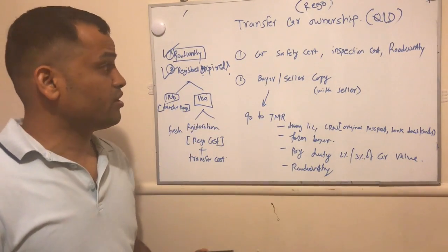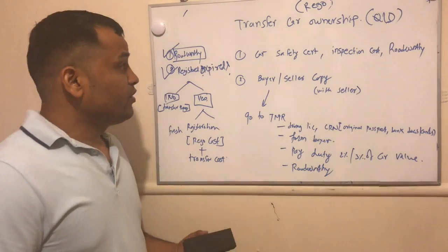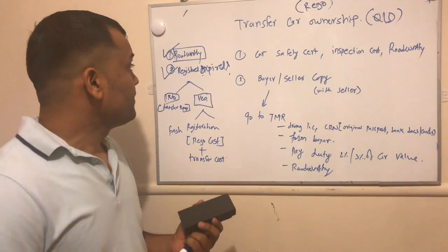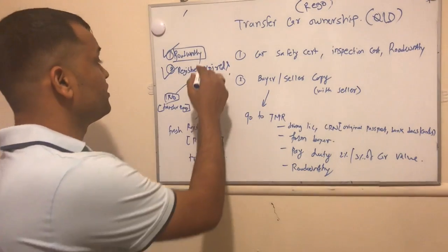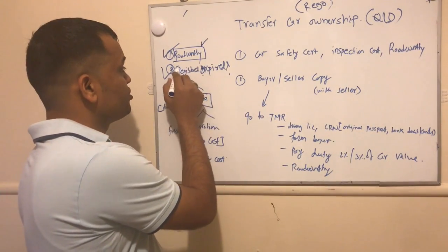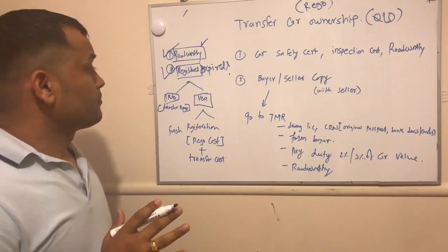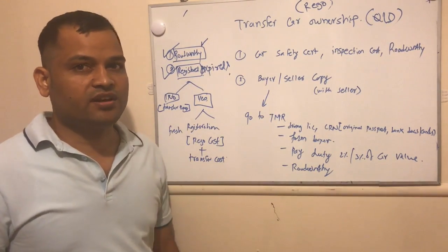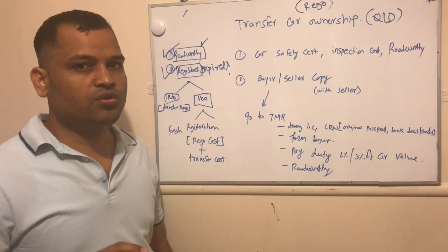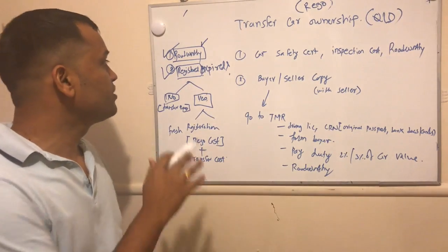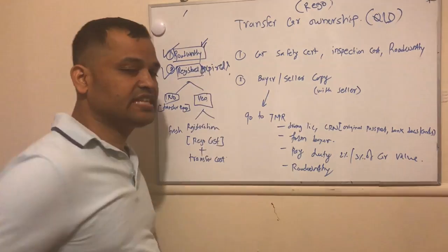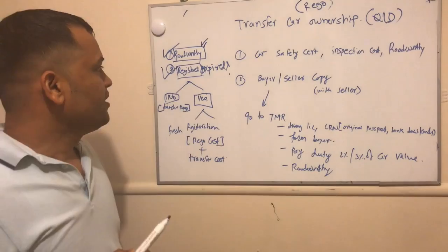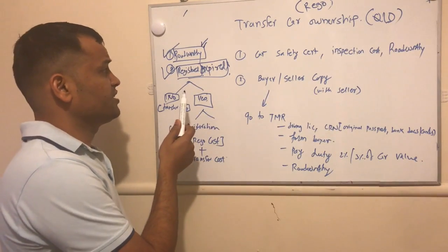Whenever you buy a car, make sure that two documents are available. The first document is the roadworthy certificate and the second is the registration document, also called a rego. If any seller is not giving you the roadworthy certificate, then don't buy that car — you will not be able to register the car without it. So make sure that the roadworthy certificate is there; it is the seller's responsibility to provide this certificate.